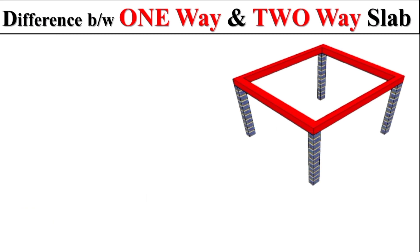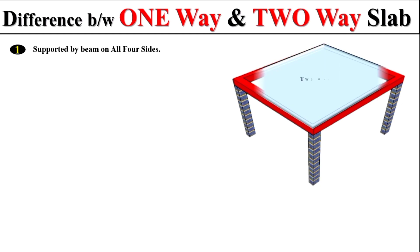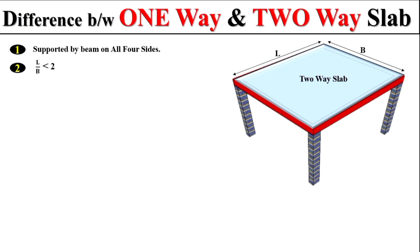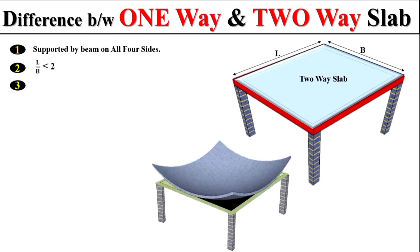Now let's come to the second one — what is a two-way slab? The two-way slab are those slabs which are supported by beams on all four sides. Also remember, the length-to-breadth ratio of the two-way slab should be less than two. The bending of the two-way slab is in two directions.